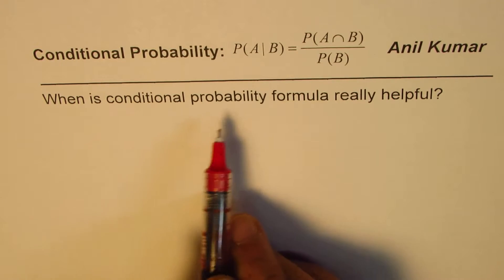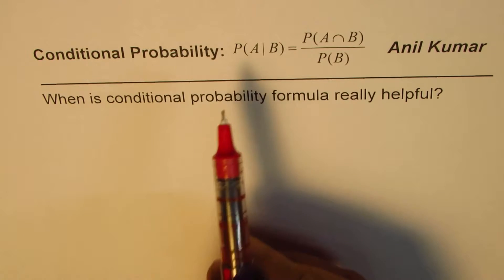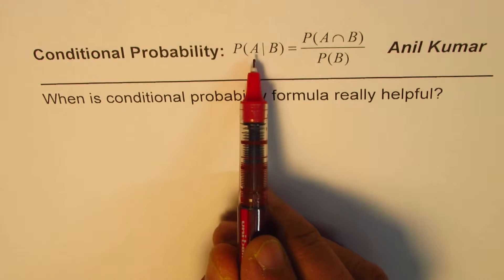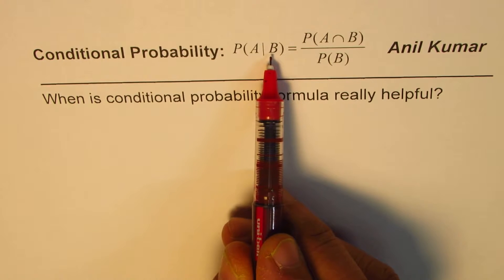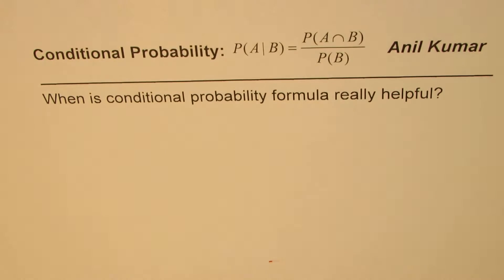When is conditional probability formula really helpful? Well, the formula, as you know, is that the probability of event A to happen when B is given is probability of intersection of events A and B divided by probability of event B.